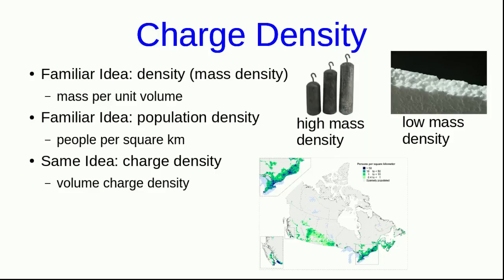We can have a volume charge density, which is a charge per unit volume of material. And so that's analogous to a mass density. We can also talk about a surface charge density, which is a density per unit surface area of some object. That's very analogous to a population density. A little less familiar would be a linear charge density. But if we're talking about a long, thin object, it makes sense to talk about the amount of charge per unit length of the object.